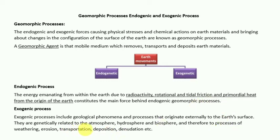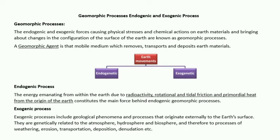Exogenic processes are genetically related to the atmosphere, hydrosphere, and biosphere, and therefore include weathering, erosion, transportation, deposition, denudation, and many more. Endogenic is due to internal forces, while exogenic is due to external forces from outside — from the atmosphere, hydrosphere, and biosphere.